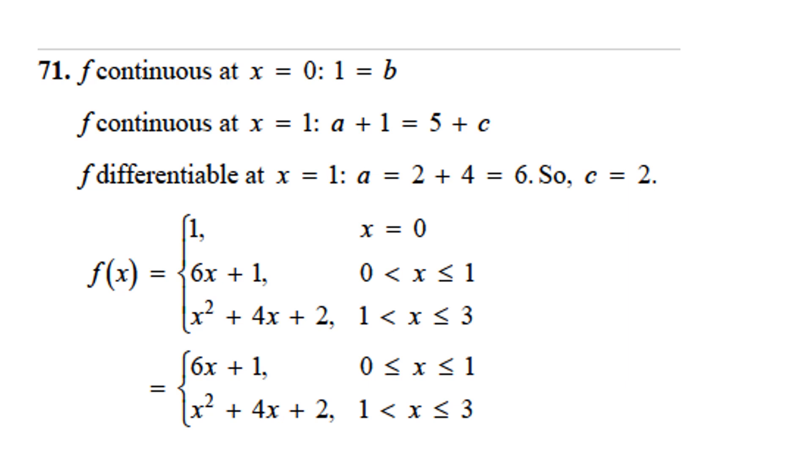Well we know it's continuous, and that will tell us, since it's continuous, that tells us that this number that was called b has to be 1. It also has to be continuous at 1, and that tells us that a plus 1 is equal to 5 plus c, and that tells us the relationship between a and c. Now since it's differentiable at x equal to 1, that means that a is equal to 2 plus 4, which means it's 6. So that tells us that c has to be 2 and a has to be 6. And we solve it, and then we have this is the solution.